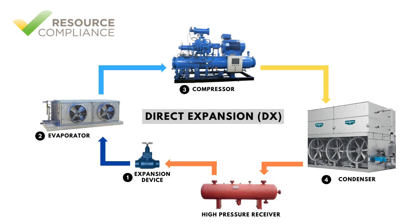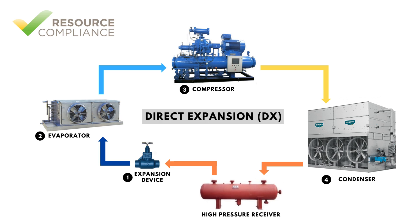Typically, the heat is rejected to the atmosphere. Inside the condenser, the refrigerant vapor is first cooled to its boiling point and then condensed at a constant temperature. The liquid refrigerant exiting the condenser typically drains into a high-pressure receiver.